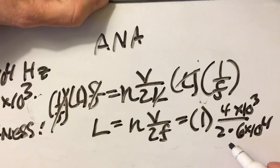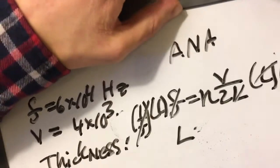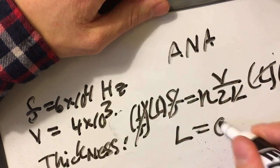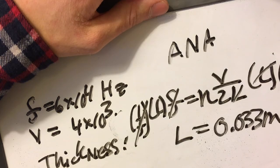If you plug this into your calculator, you should get thickness of the crystal to be 0.033 meters. That's it.